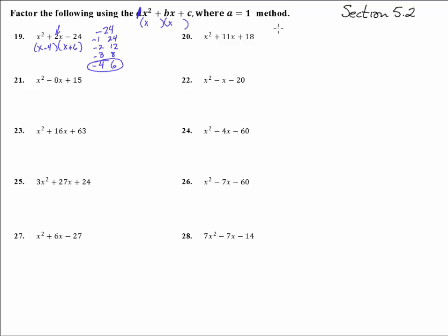On number 20, we have 18. That's 1 and 18 that we could use, a 2 and 9, or a 3 and 6. And some of you are like, whoa, stop - 2 and 9, that adds to 11. So yep, x plus 2, x plus 9, that's correct.